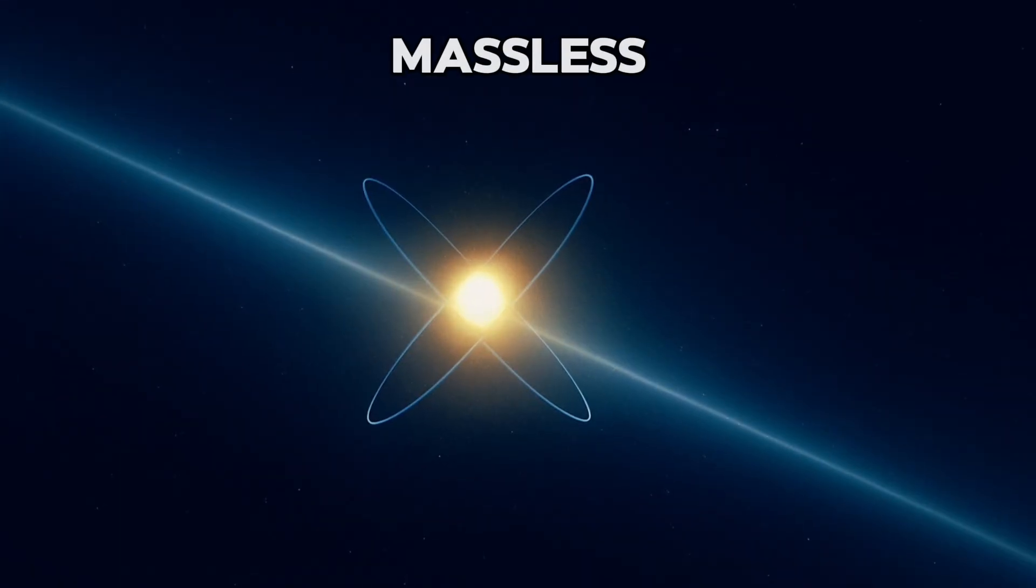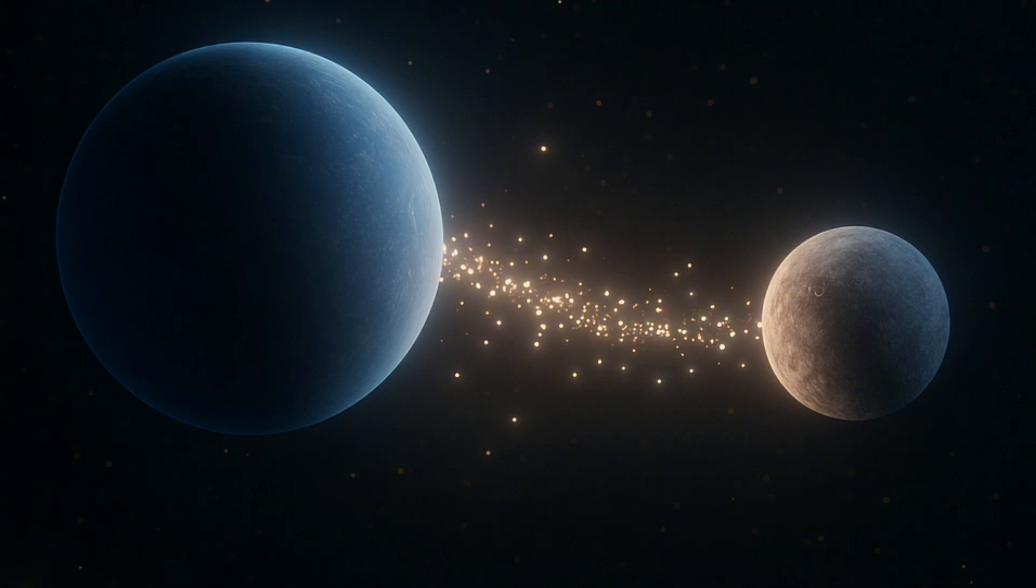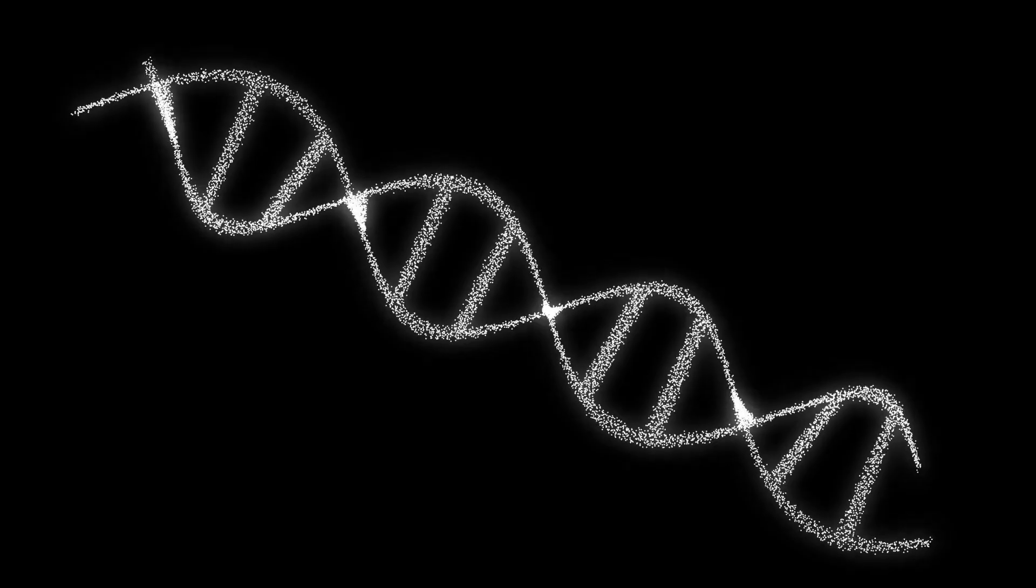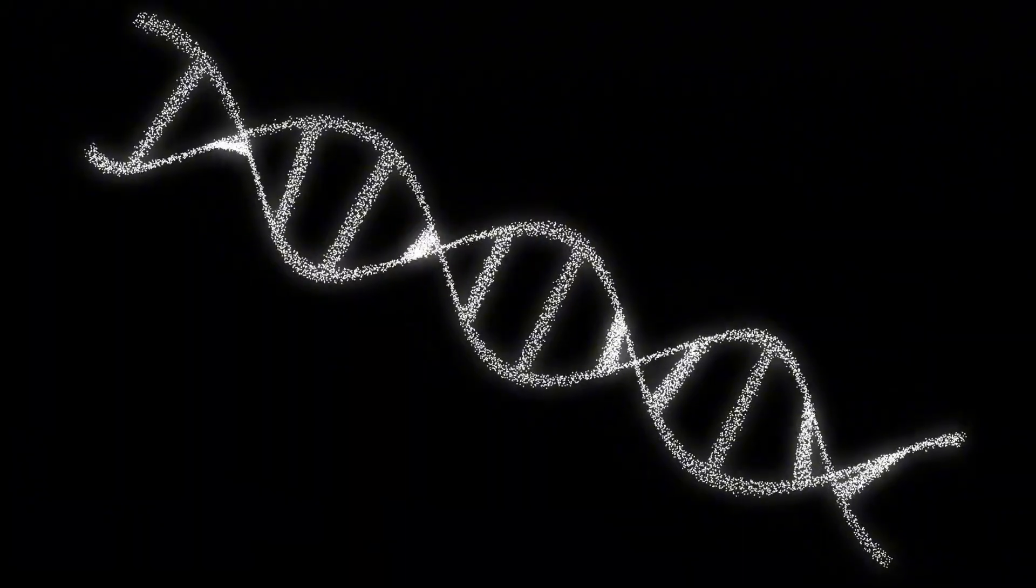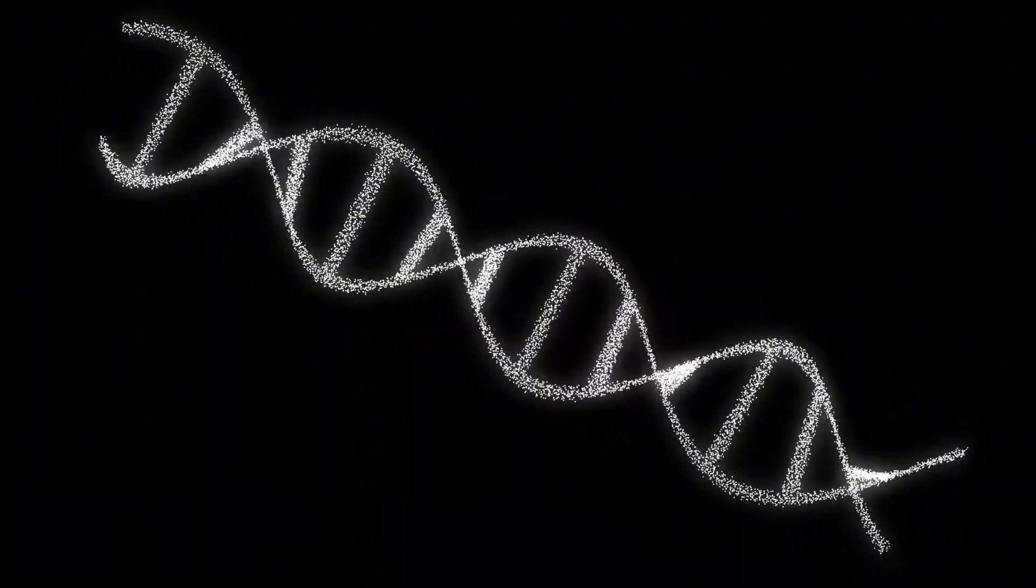The graviton would be massless, moving at the speed of light with a spin of two. If it exists, it explains why gravity always pulls and never pushes. And interestingly, in string theory, the graviton appears automatically as if nature itself is hinting at its existence.